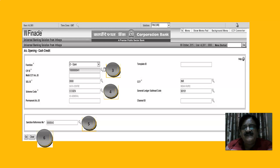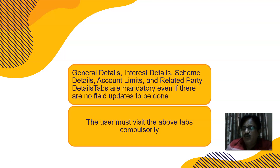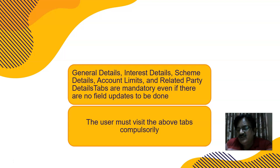The CCY is INR; subsidiary ledger sub-head code is 60101, which is automatically populated. The tabs you must visit are: General Details, Interest Details, Scheme Details, Amount Limits, and RPD — Related Party Details. If there are more than one authorized signatory or directors operating the account, we'll have two KIFF IDs and must add them as joint or either-of operators of the CC account.